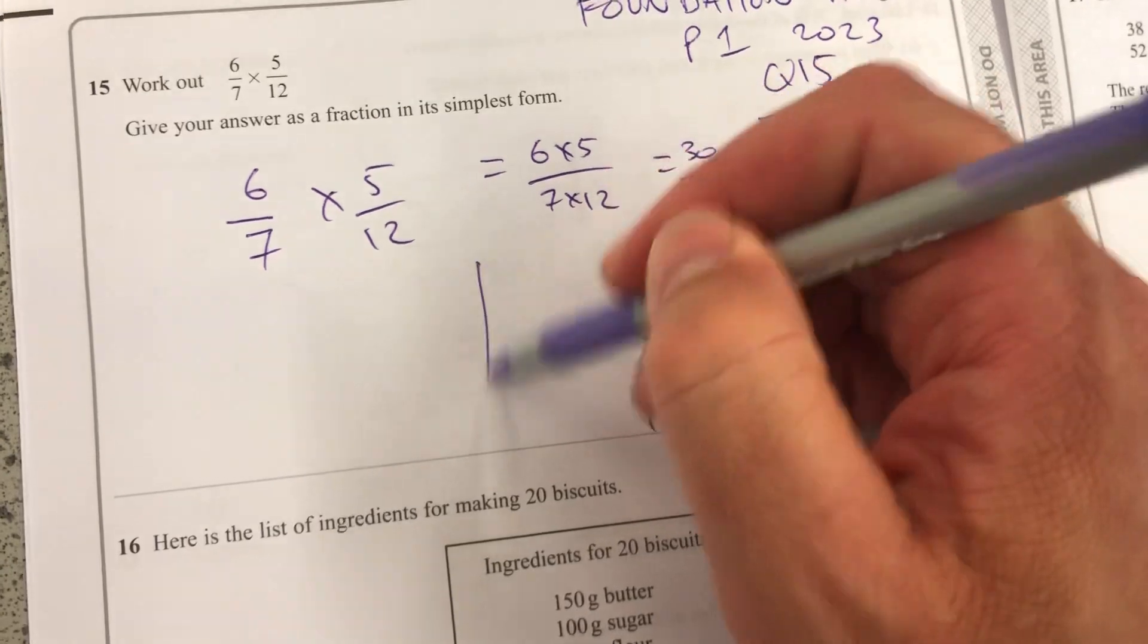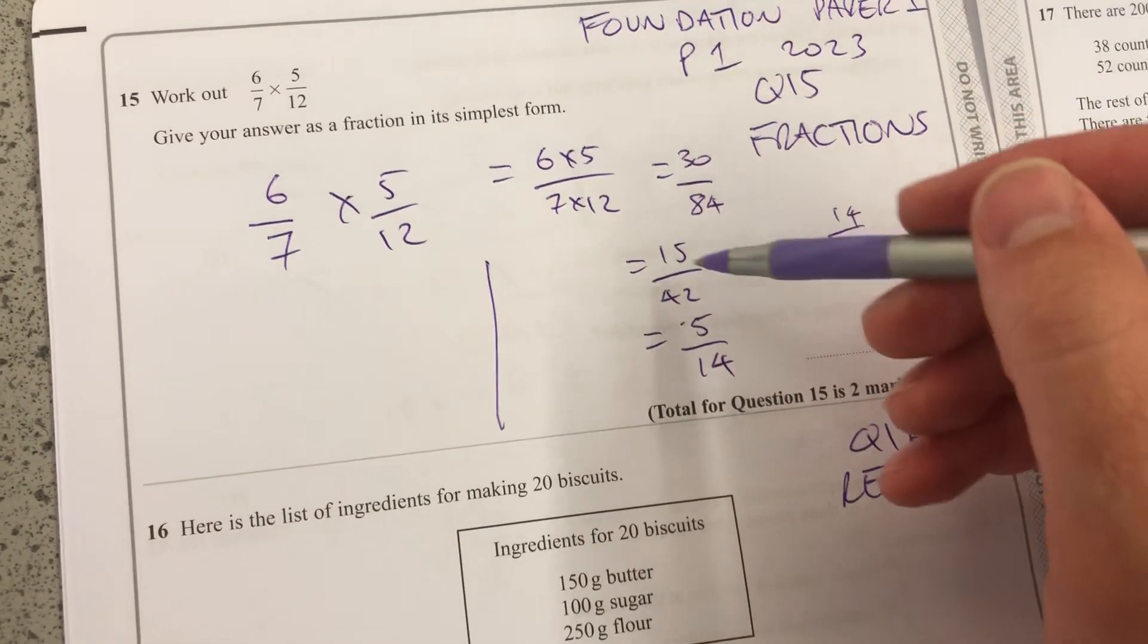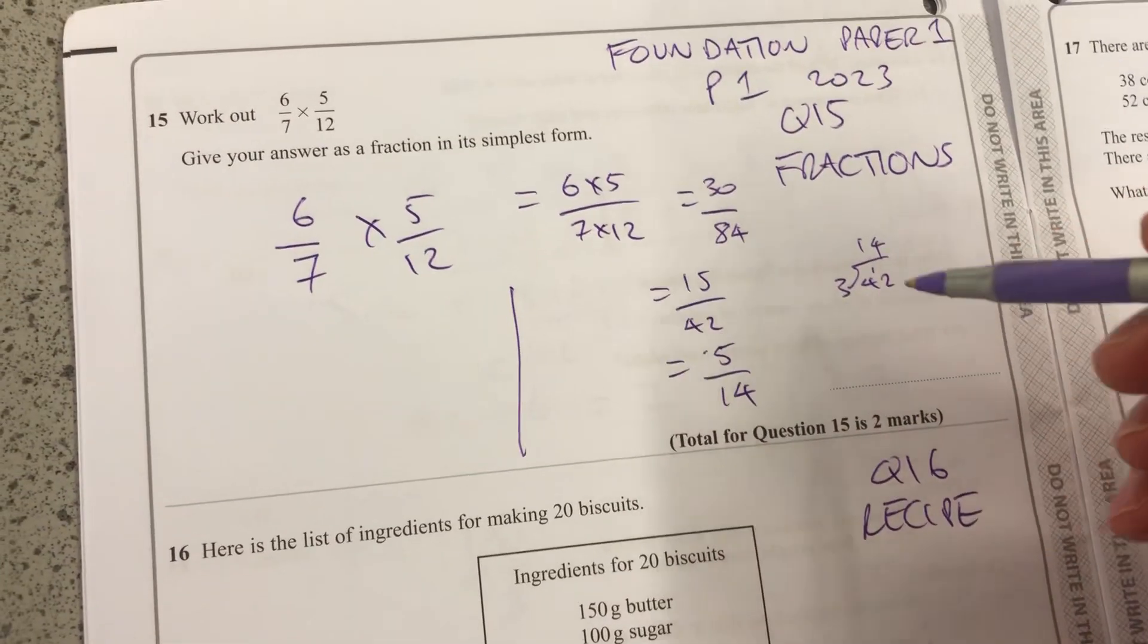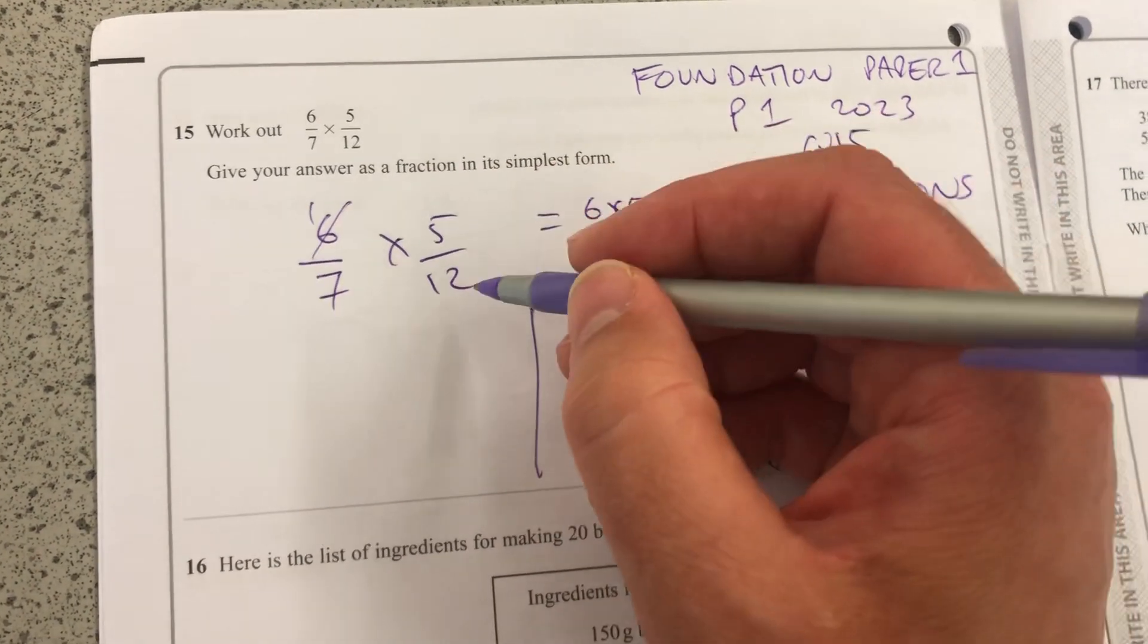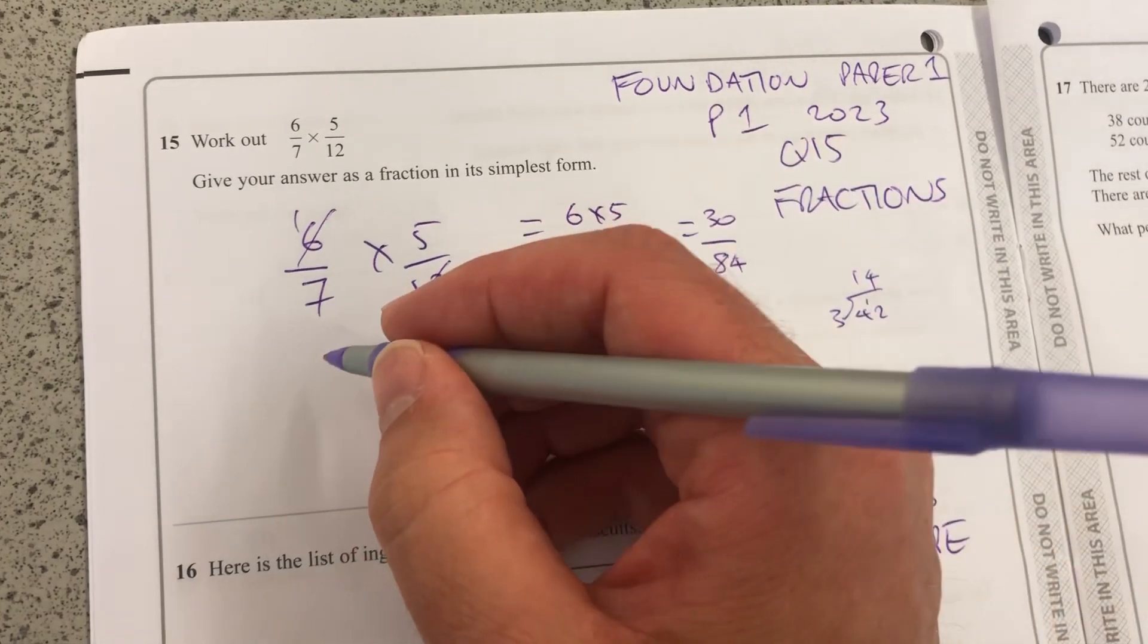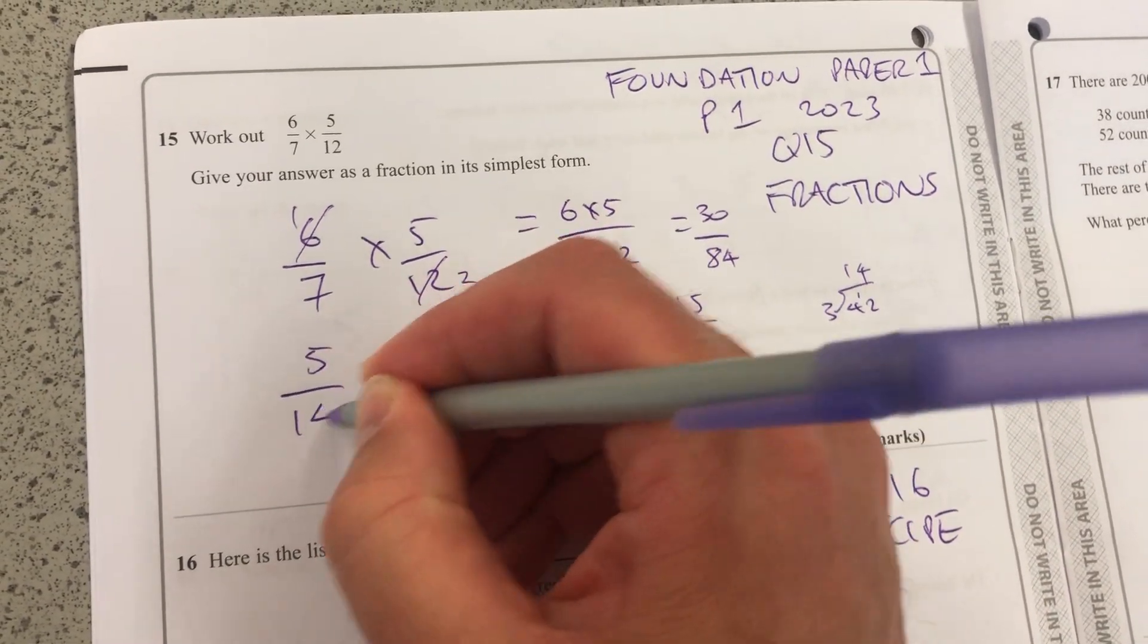But I find a much simpler way of doing it is cancelling factors first. You can see I started to struggle a bit with these bigger numbers, even if they're just 42. So, 1 lot of 6 there, 2 lots of 6 there. I can cancel straight away and make it 5 over 14.